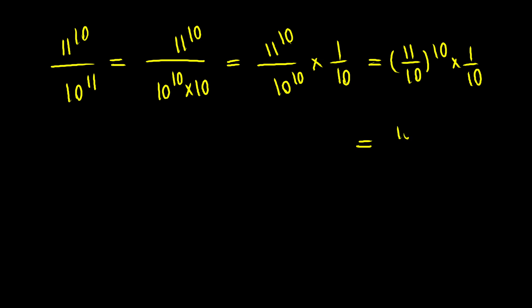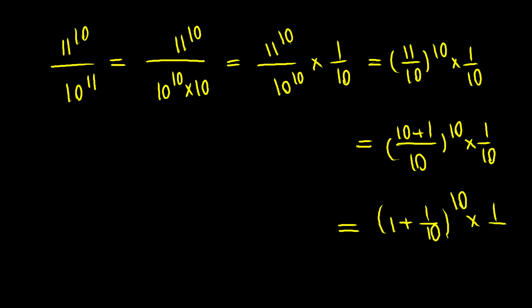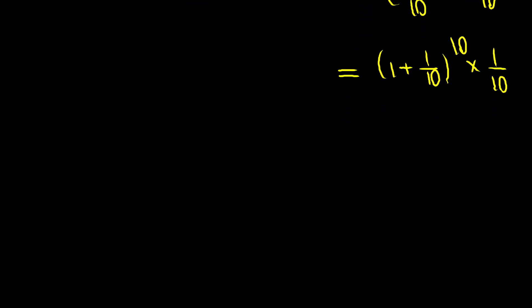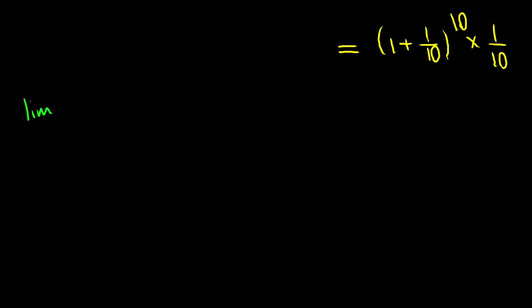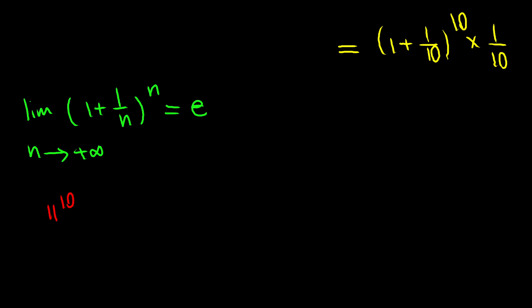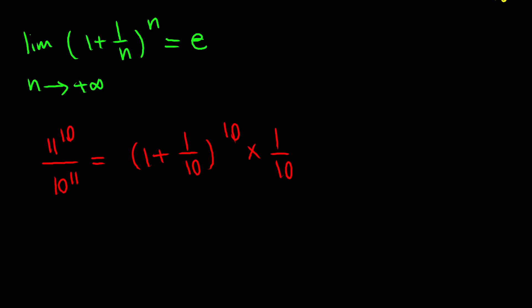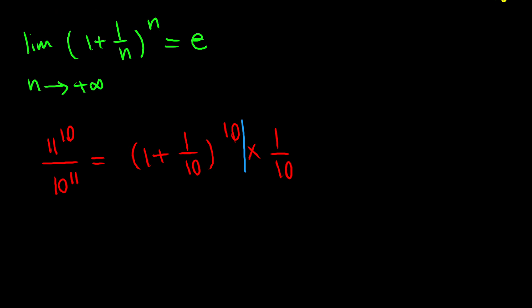Next, let's go ahead and replace 11 with 10 plus 1. Then let's break this fraction into two fractions to have (1 plus 1 over 10) all to the power of 10, times 1 over 10. Now let's talk about the special limit, which states that the limit of (1 plus 1 over n) to the power of n as n approaches positive infinity equals e. Our ratio was equal to (1 plus 1 over 10) to the power of 10 times 1 over 10. It is obvious that this number is in that form, and 10 is less than positive infinity. Therefore, this part is less than e.